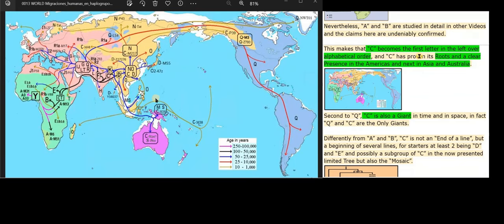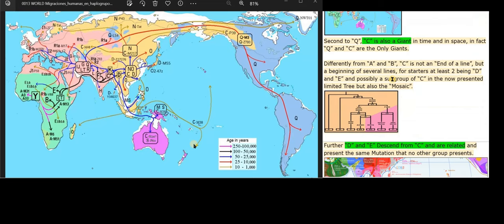This makes that C becomes the first letter in the leftover alphabetical order, and C has proven its roots in a clear presence in the Americas and next in Asia and Australia. Second to Q, C is also a giant in time and in space. In fact, Q and C are the only giants.